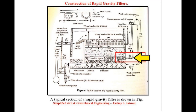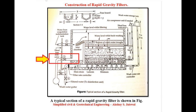Valve number 5 is closed after supplying the required amount of air. Compressed air pass hone ke baad valve number 5 ko band kiya jata hai. The dirty water resulting from washings overflows into the wash water trough and is removed by opening valve number 2 through the inlet chamber into the wash water gutter. The process of washing the filters and removing the dirty water is generally continued for a period of 3 to 5 minutes. Washing ke baad nikalne wala mela paani wash water trough mein laaya jata hai aur valve number 2 se inlet chamber se hote hue wash water gutter se bahar nikaala jata hai.